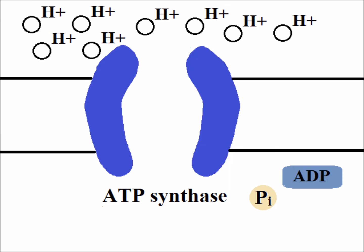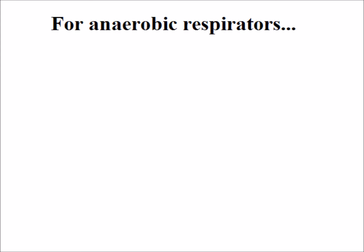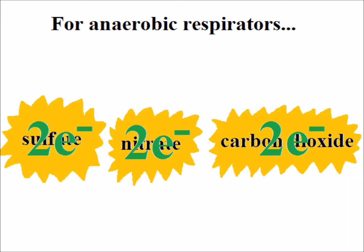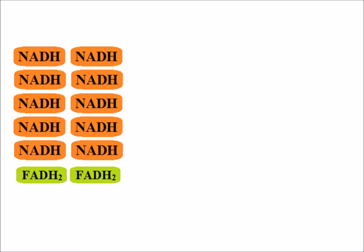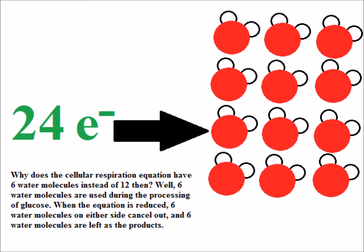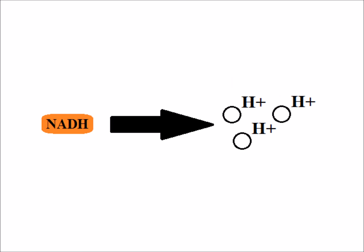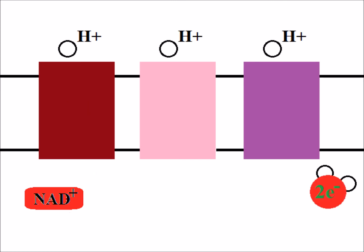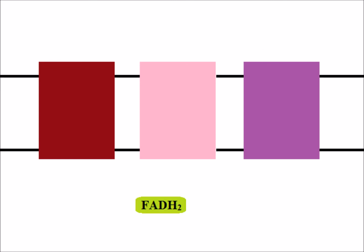Meanwhile, hydrogen cations return into the mitochondrial matrix via ATP synthase. For anaerobic respirators, the ending is different — depending on the reactants and bacteria, any compound other than oxygen is the final electron acceptor, creating compounds ranging from sulfur to methane. For every 12 energy molecules — 10 NADHs and 2 FADH2s — 24 electrons are released, making 12 water molecules. In the electron transport chain, each NADH permits 3 hydrogen protons to move across the membrane, while each FADH2 permits 2, because FADH2 releases its electrons further down the chain.